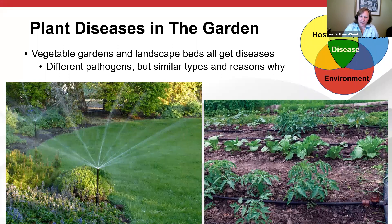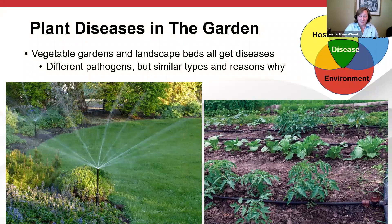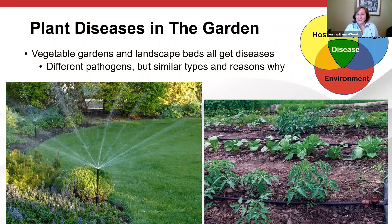One of the things we talk about within plant pathology is our disease triangle, which is the image up there in the upper right-hand side. In order for a disease to develop, you have to have a susceptible host, a pathogen that can cause disease on that host, and an environment that favors that pathogen causing disease on that host. Where all three of those things combine — that center green area — that is the area that will get disease. So if you're trying to avoid disease, you need to remove one side of that triangle.